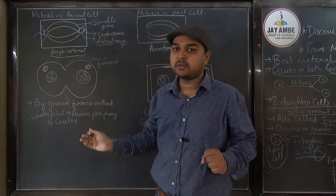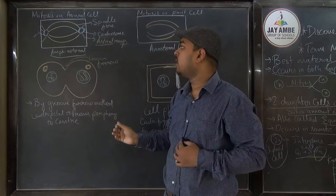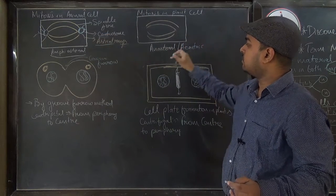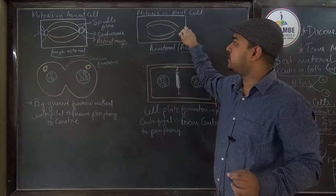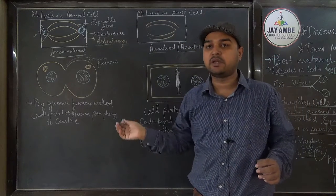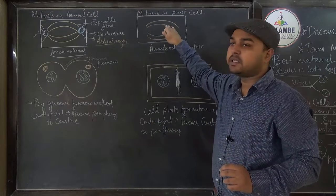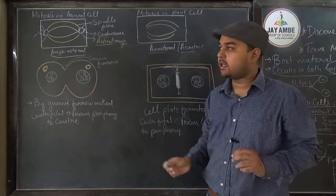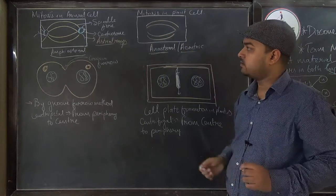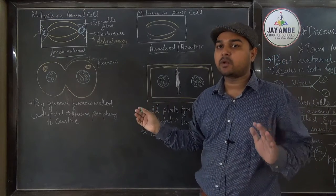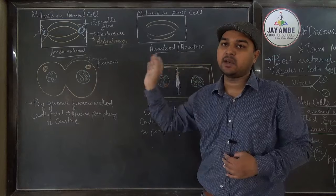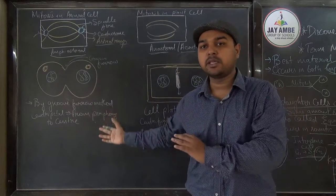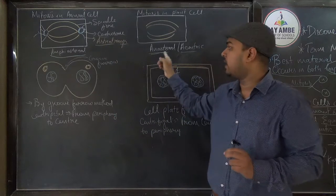In animal cells, the astral rays are amphiaster and centrosomes are present. In plant cells, it is anastral — meaning astral rays are not present on any side. Plant cells do not have centrosomes either. So only spindle fibers are present in plant cells — no centrosome, no astral rays. Therefore plant cell mitosis is called anastral, while animal cell mitosis is amphiaster.